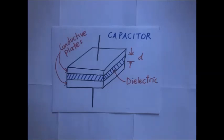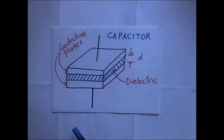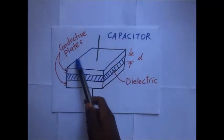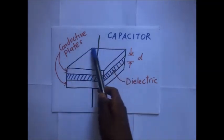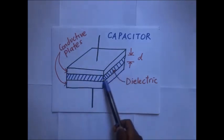Thanks for tuning in — this is Kisembo Academy. Now, what exactly is a capacitor? It is simply a passive two-terminal device which is used to temporarily store electrical charge. In our diagram here we have a diagram of a capacitor. These are the two terminals we are talking about, and these two terminals are connected to two conductive plates — one on the top and one at the bottom.